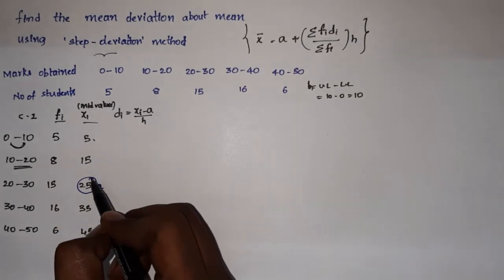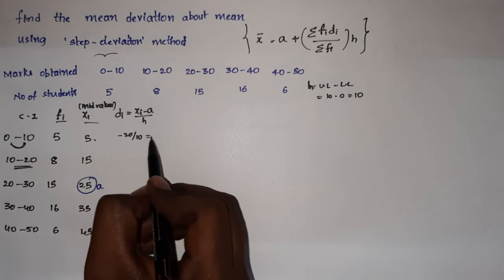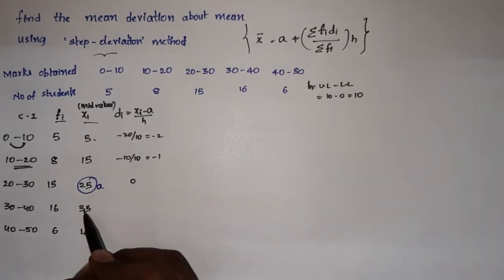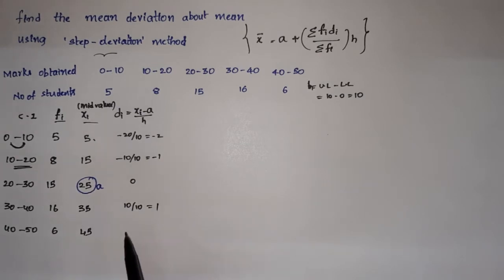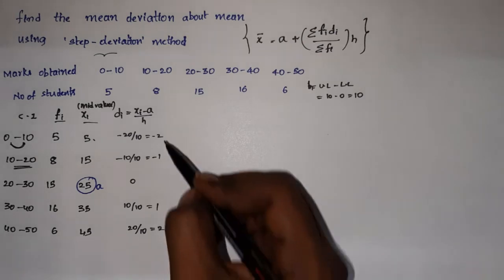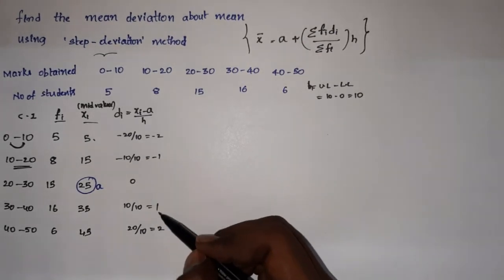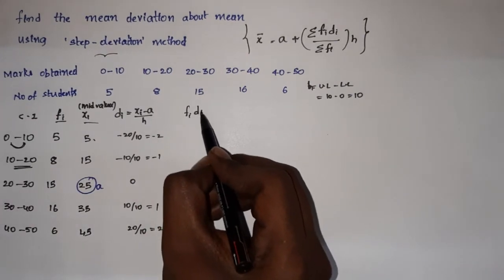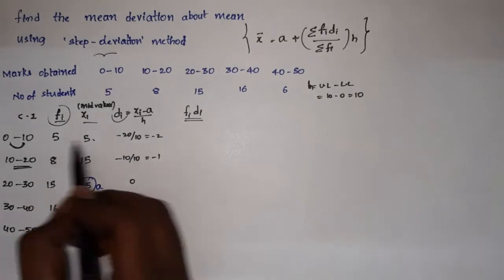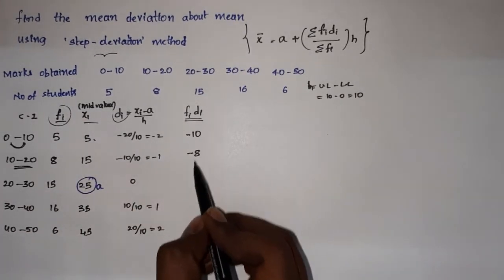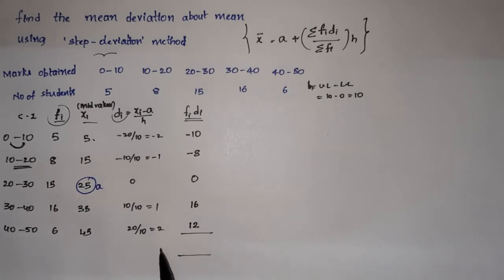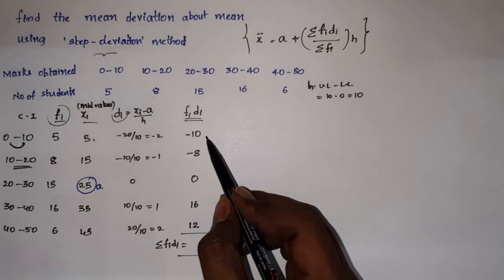The mid values xi are 5, 15, 25, 35, 45. With assumed mean A = 25, the di = (xi − A)/h values are: (5−25)/10 = −2, (15−25)/10 = −1, (25−25)/10 = 0, (35−25)/10 = 1, (45−25)/10 = 2. So di values are −2, −1, 0, 1, 2. Then fi·di: 5×(−2) = −10, 8×(−1) = −8, so Σfi·di for negatives is −18; 16×1 = 16, 6×2 = 12, giving 28 − 18 = 10.